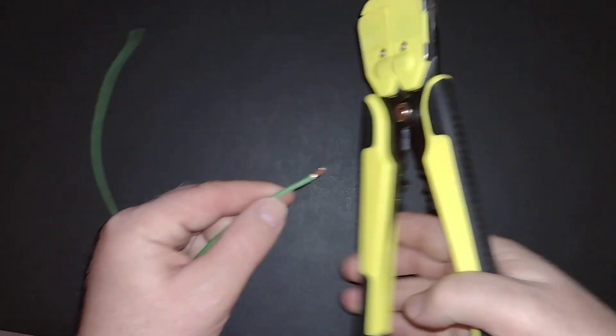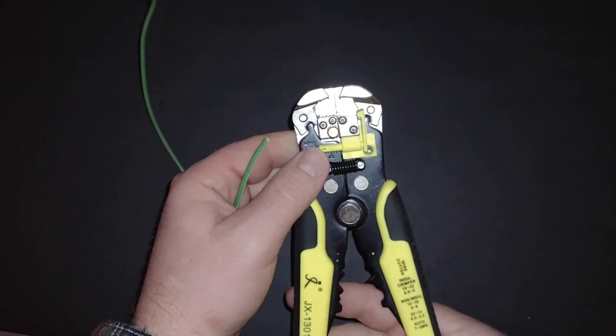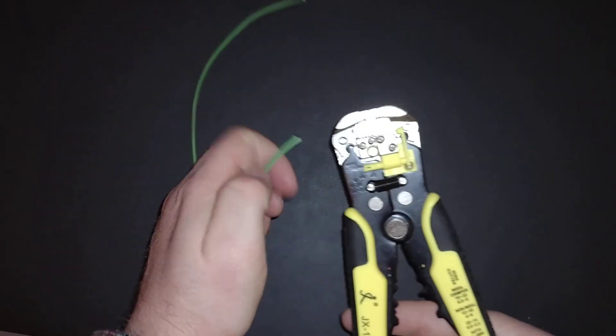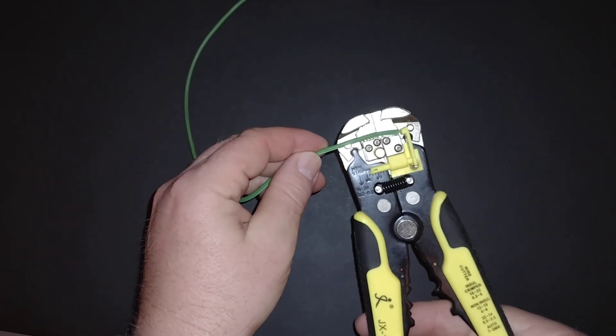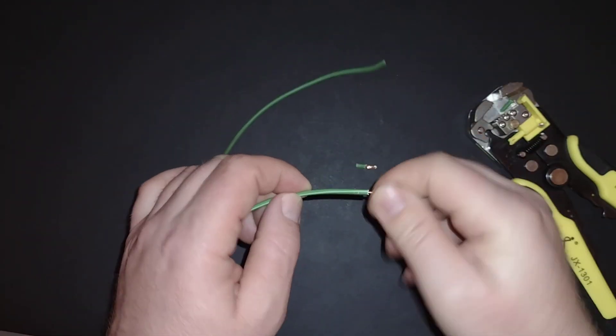Cuts it off. Say I want a short stripped wire - you would just place it in there against the stop, one click, and you've got a perfectly stripped wire.